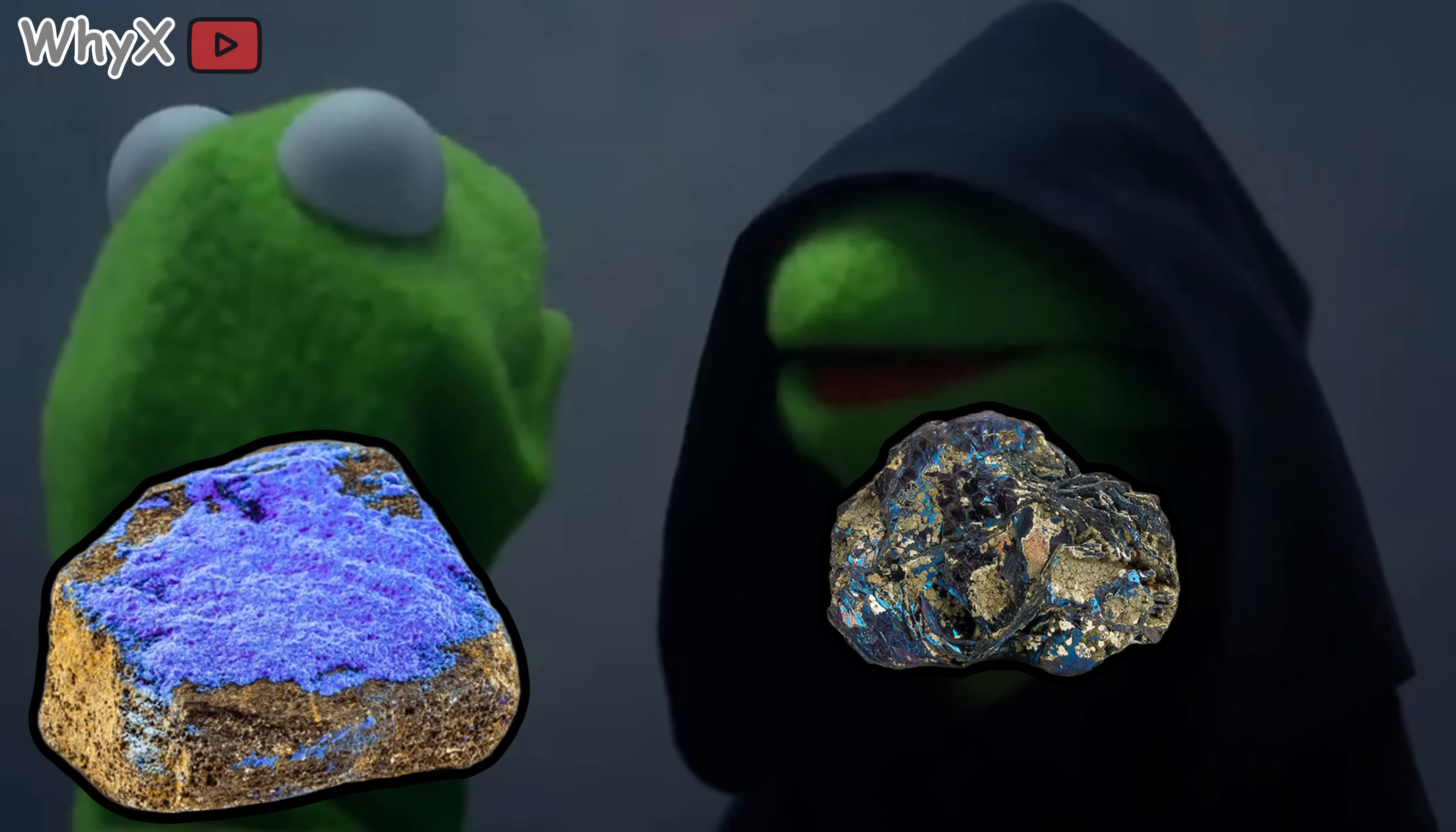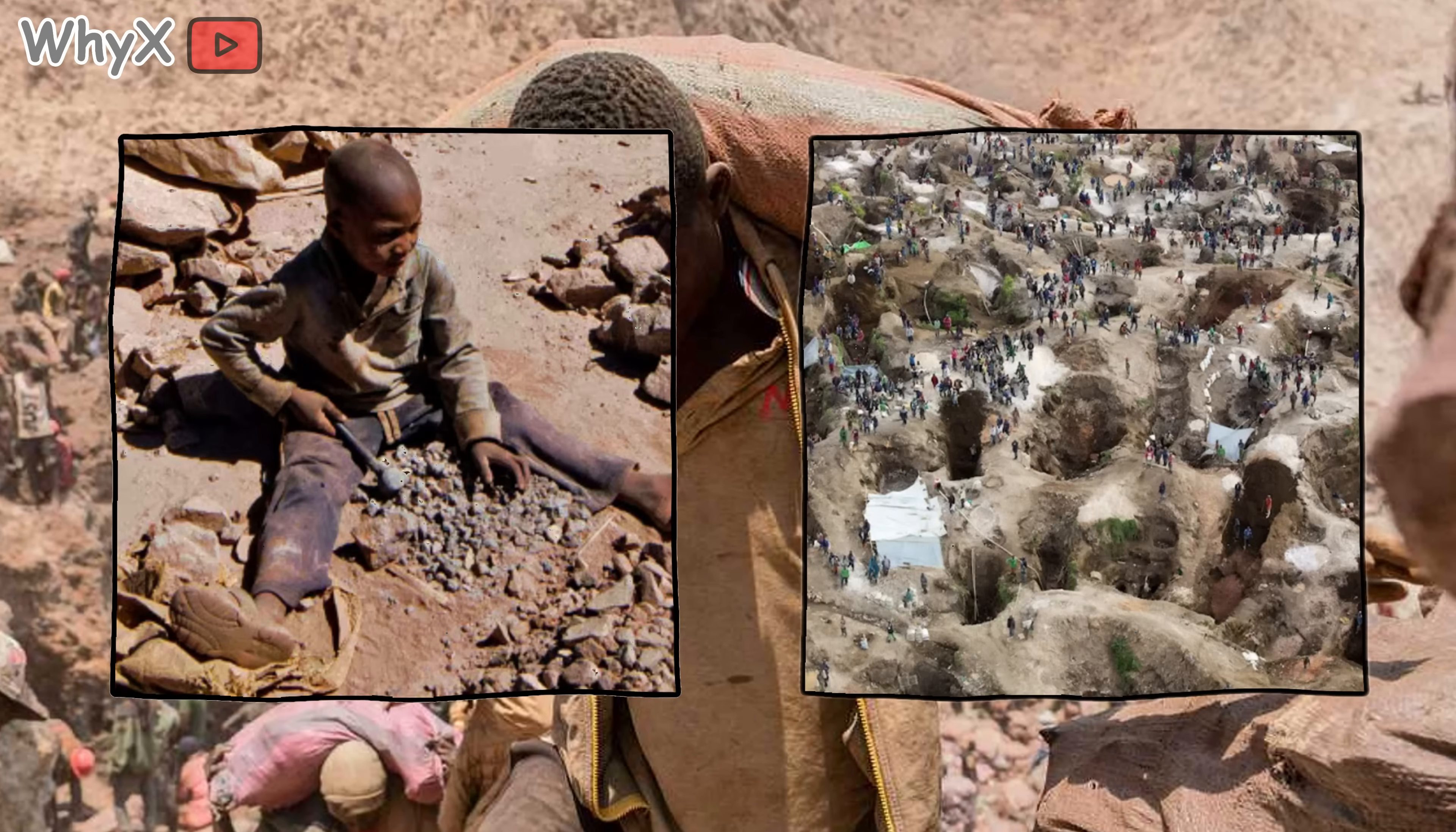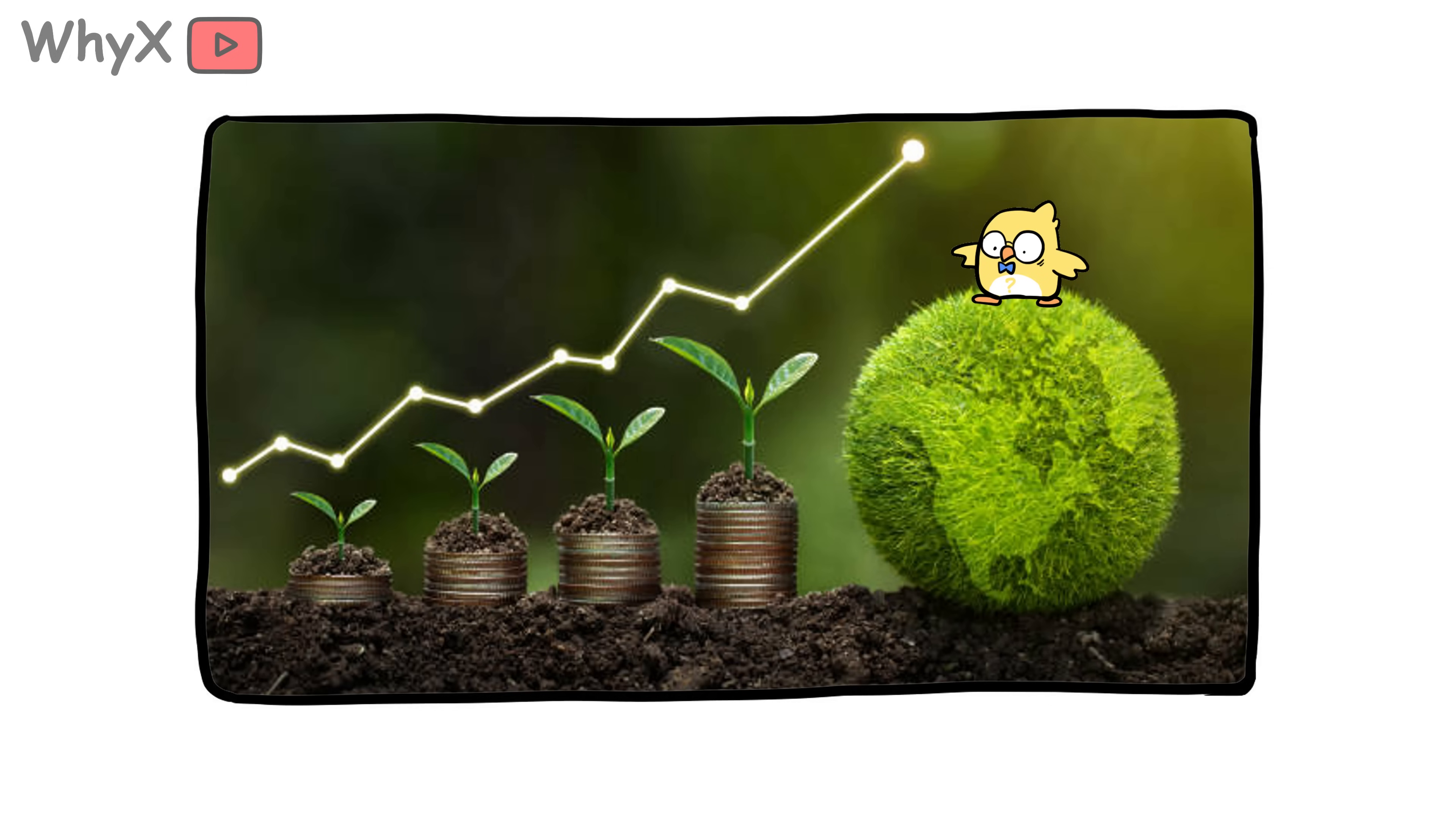But cobalt has its own dark side. About two-thirds of the world's supply comes from the Democratic Republic of Congo, where mining conditions have sparked serious concerns about child labor and environmental harm. This is why researchers are racing to develop cobalt-free batteries that still perform well. Because a green future should not come with a hidden human cost.